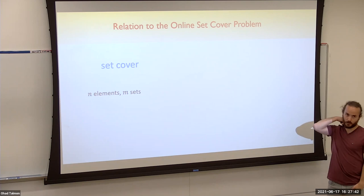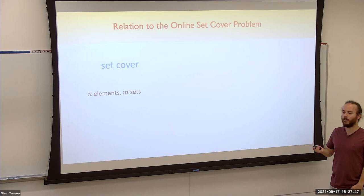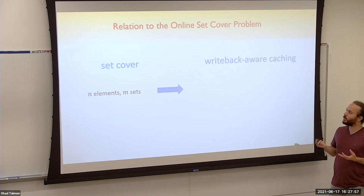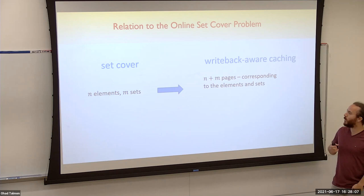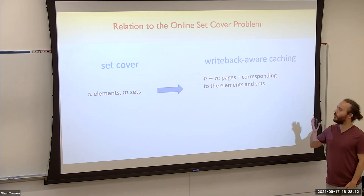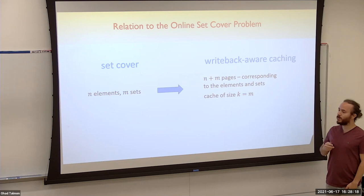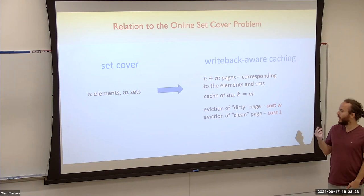The relation of this problem to set cover is pretty surprising, because set cover seems like a harder problem than regular paging in terms of hardness. We show a reduction from online set cover to writeback-aware caching. In set cover we have n elements and m sets; we reduce it to an instance of paging with n+m pages, where each page corresponds to either a set or an element. The cache size equals exactly the number of sets in the set cover instance. Eviction costs are unweighted: a dirty page costs w and a clean page costs 1, where w is much larger than 1.